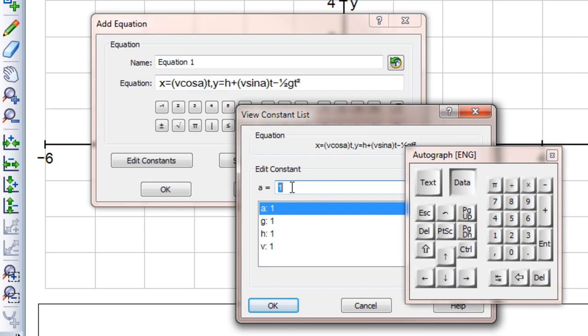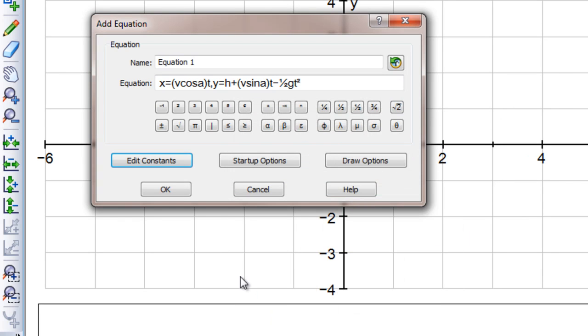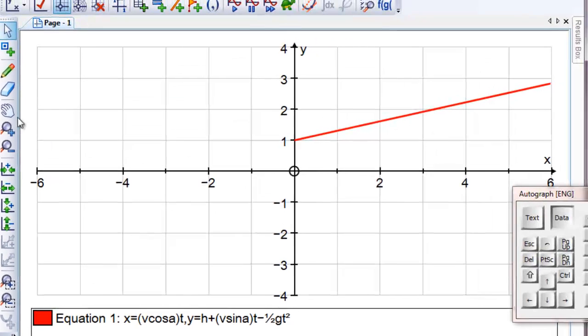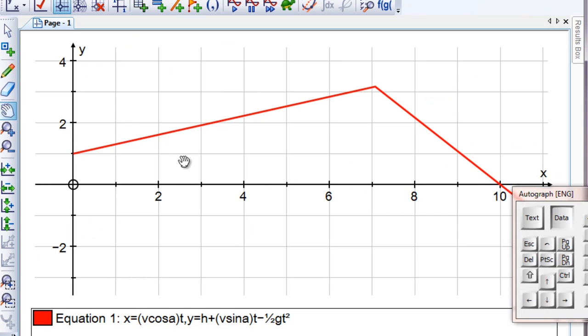We're just going to have a look at the constants now. We want to set the angle to 45. We want to set the gravitational acceleration to 9.81. Leave the height at 1 meter. Some of them do squat down quite a bit to throw these shots. And velocity of 10 meters per second. We'll try that and see how we get on. Looks like the plotting has gone a little awry.